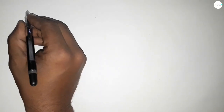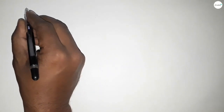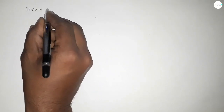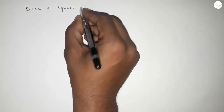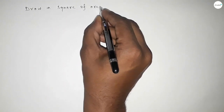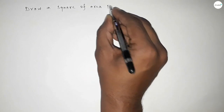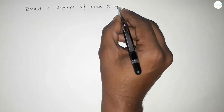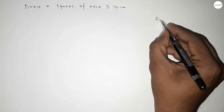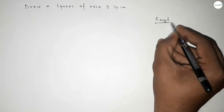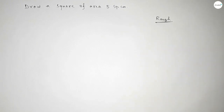Hi everyone, welcome to SSR Classes. Today in this video we have to draw a square of area 5 square centimeters. So let's start the video. First of all, roughly discussing some calculation here. So we can write 5 as 5 into 1 equal to 5.